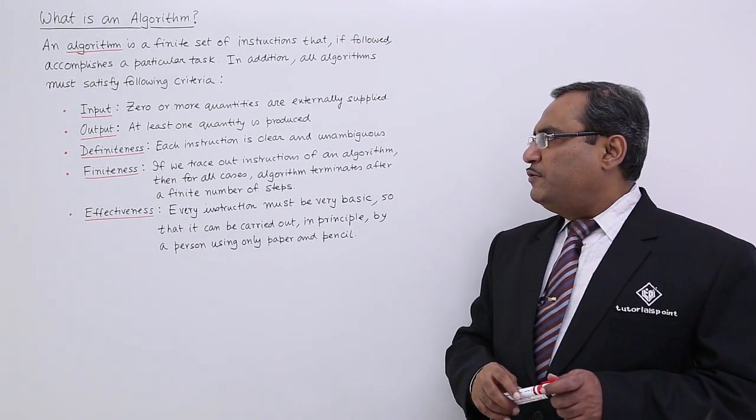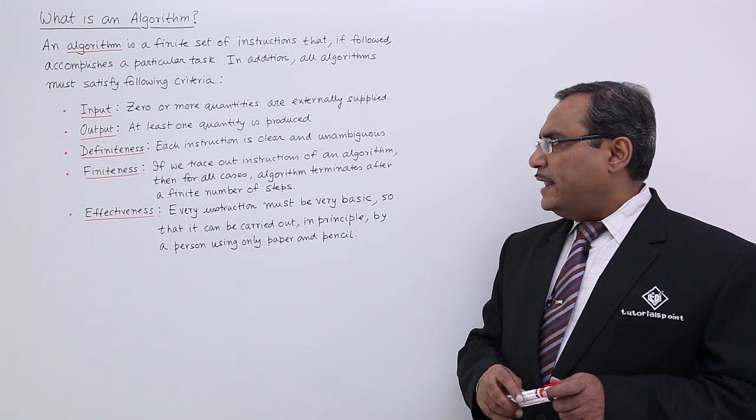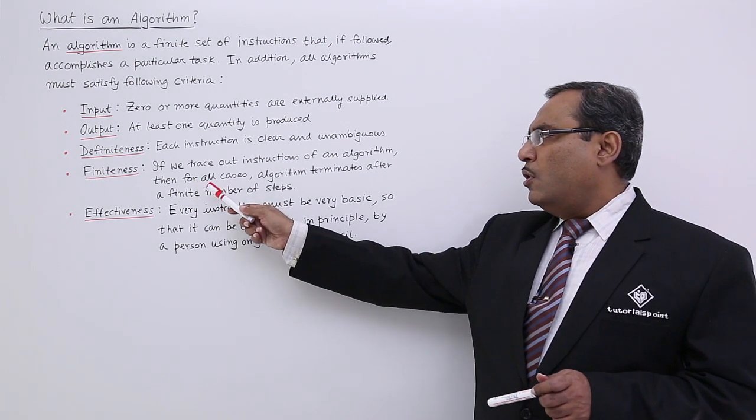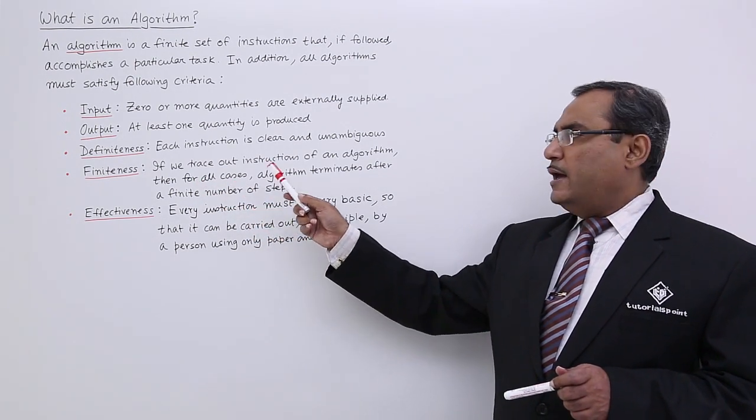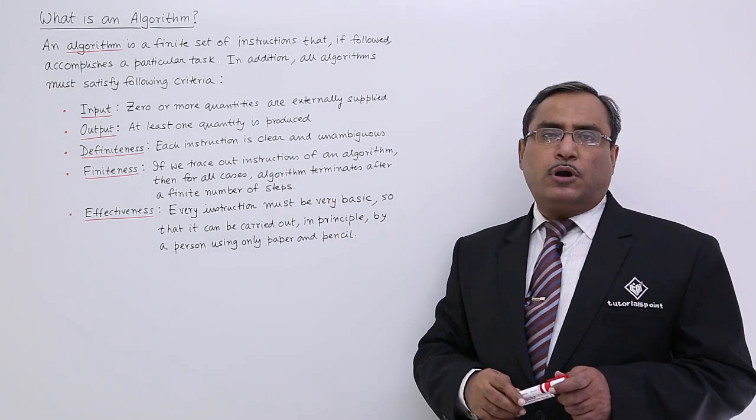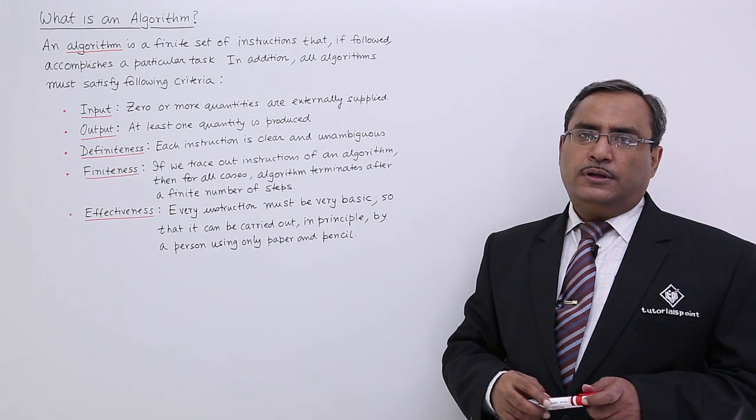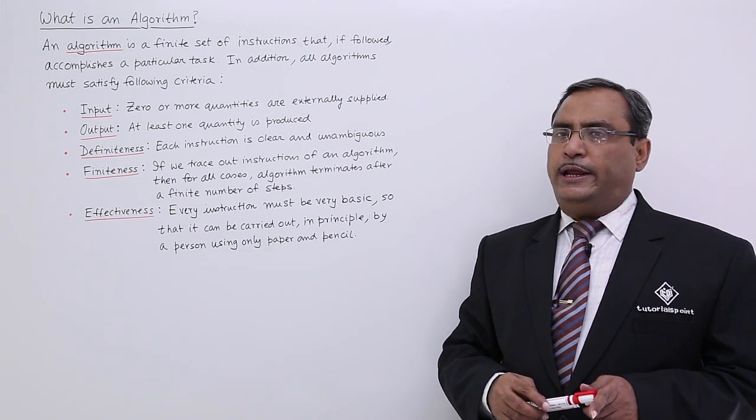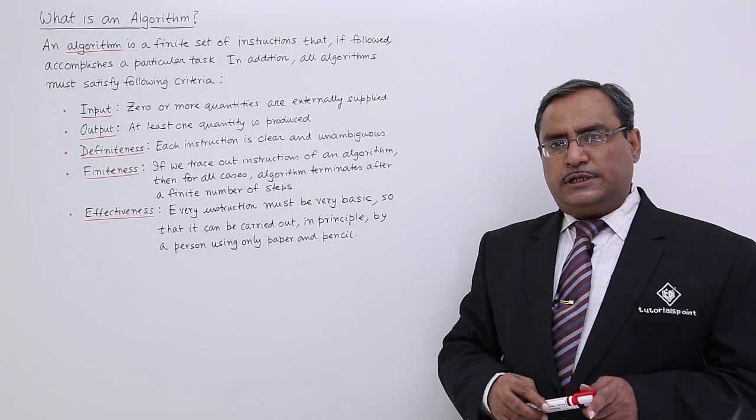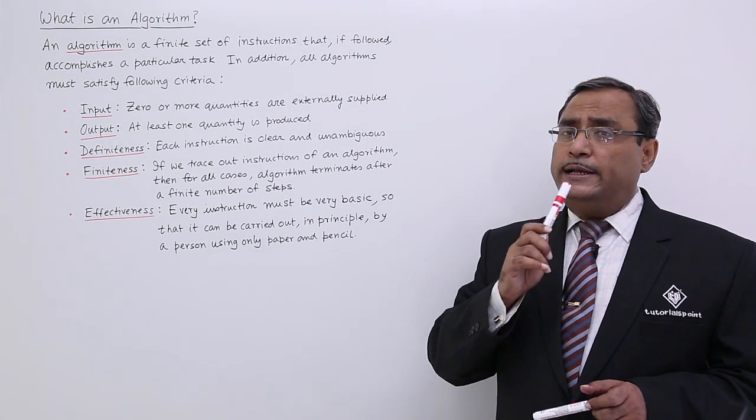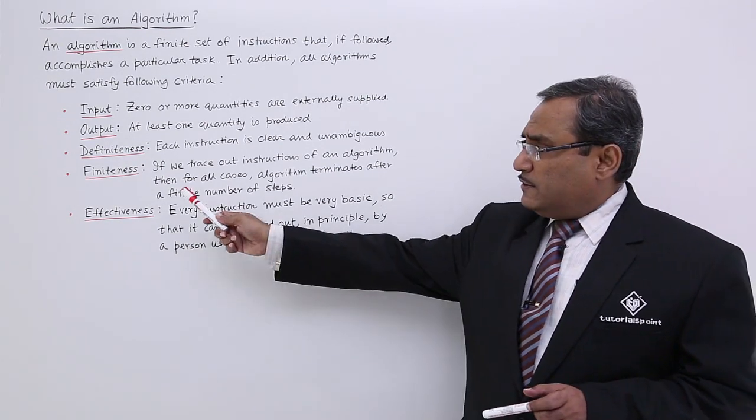Finiteness: If we trace out the instructions of an algorithm, then for all cases, the algorithm terminates after a finite number of steps. An algorithm cannot go on forever. Obviously, after executing a certain number of instructions, an algorithm will get terminated. This is known as finiteness.